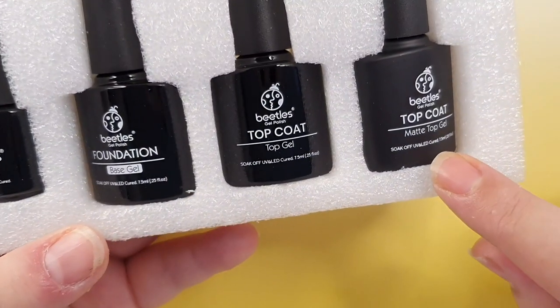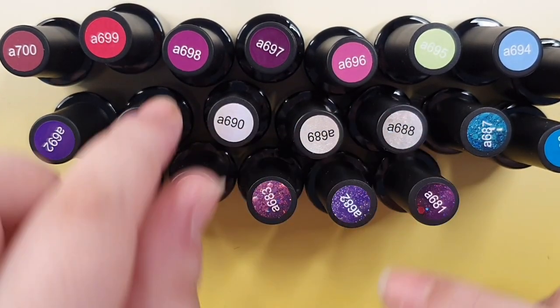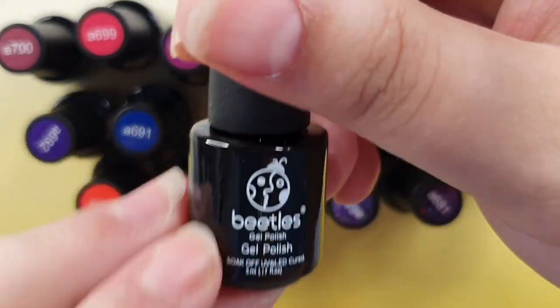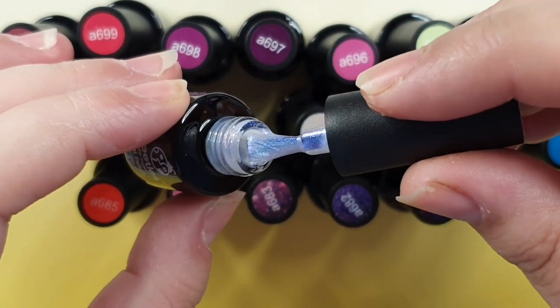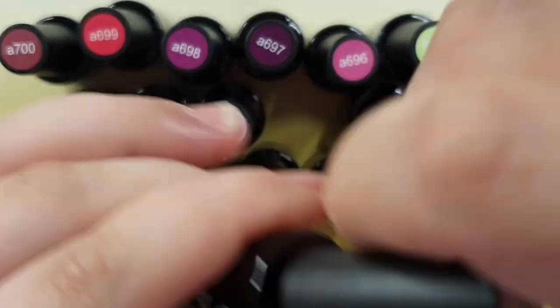It comes with instructions where it tells you to apply, prep and remove. It also comes with a base, a matte top coat and a glossy top coat, along with four different little glitters and two brushes as well.